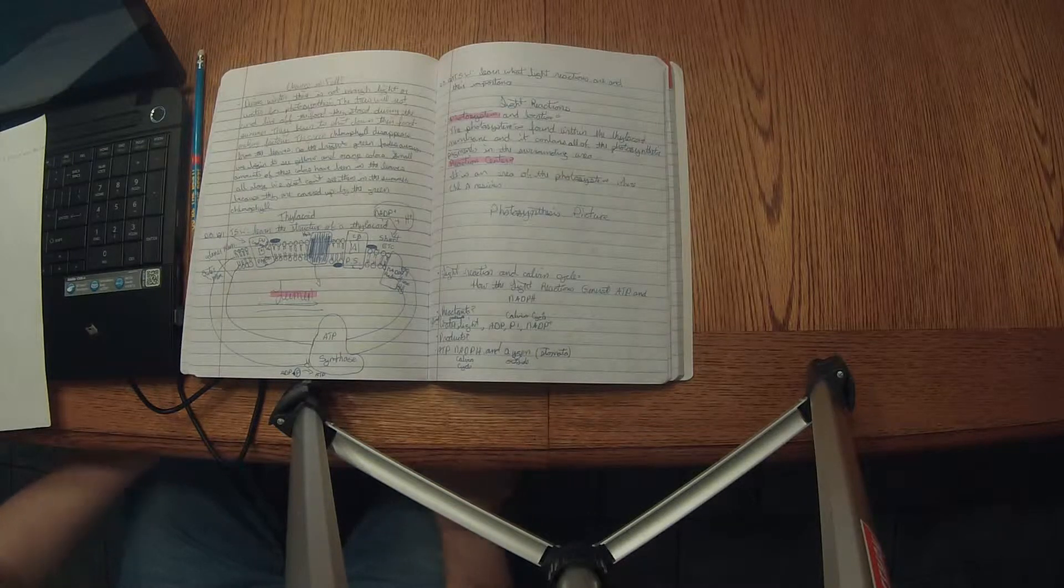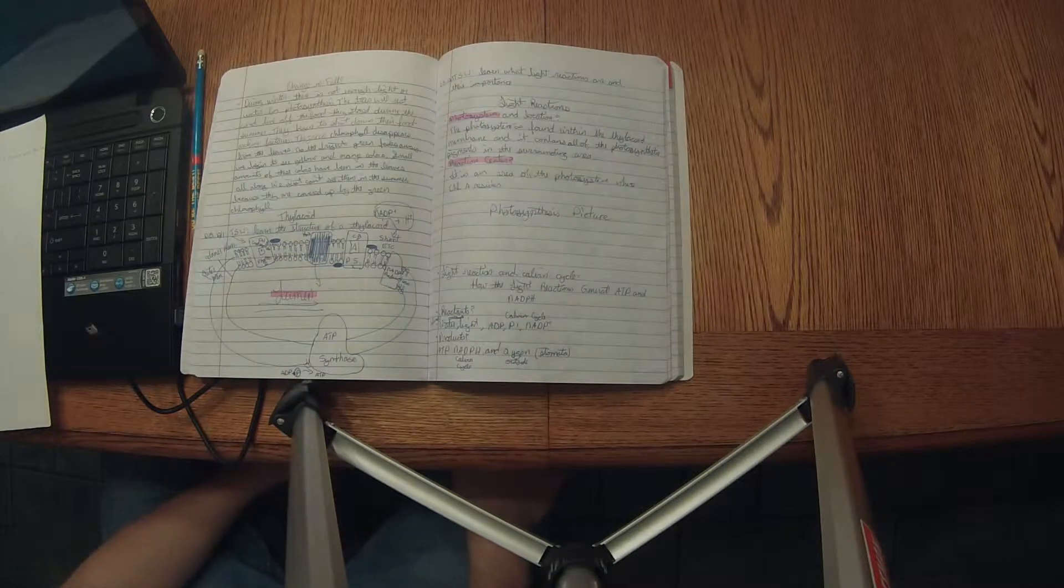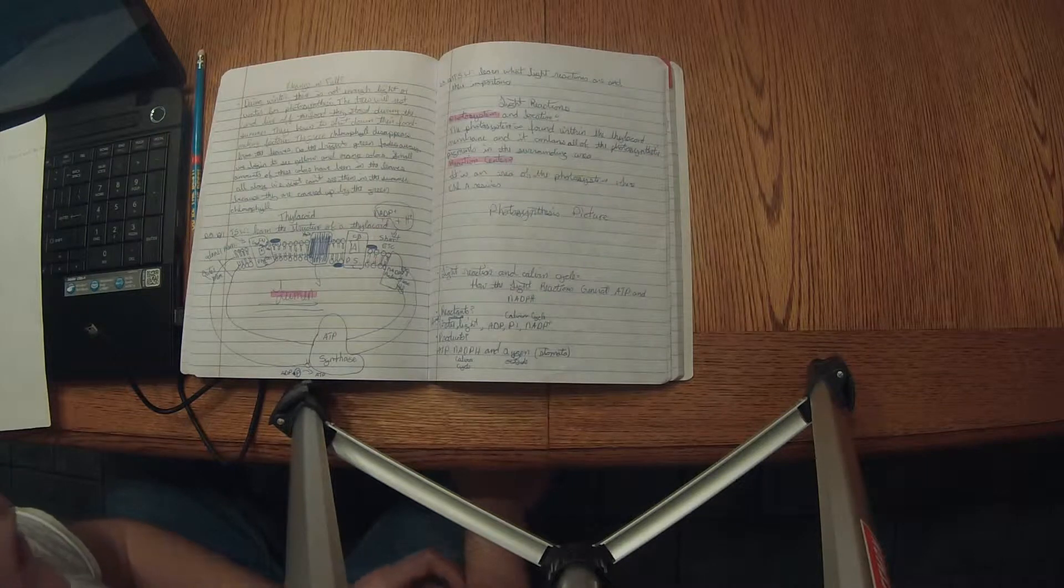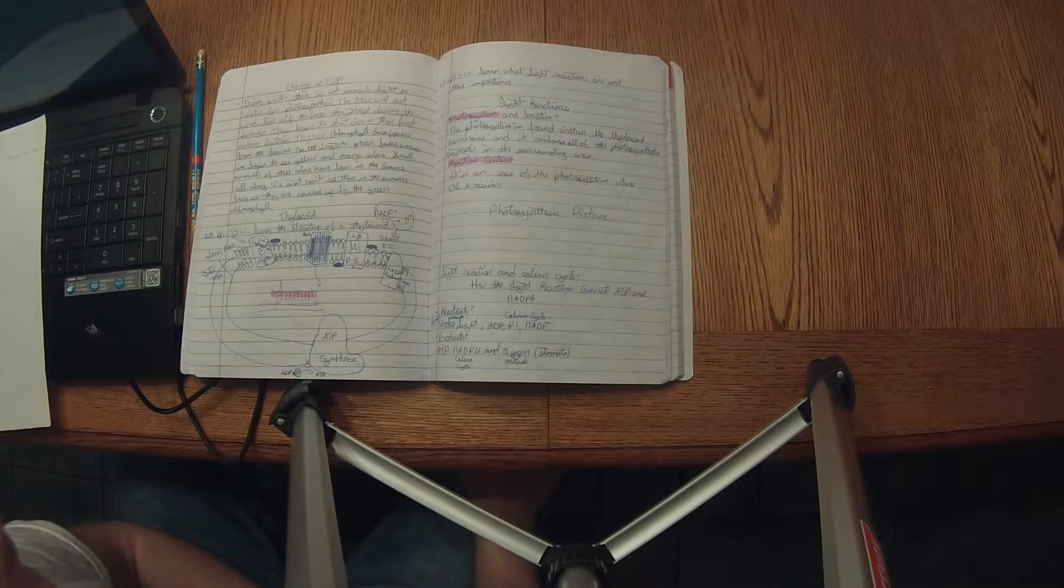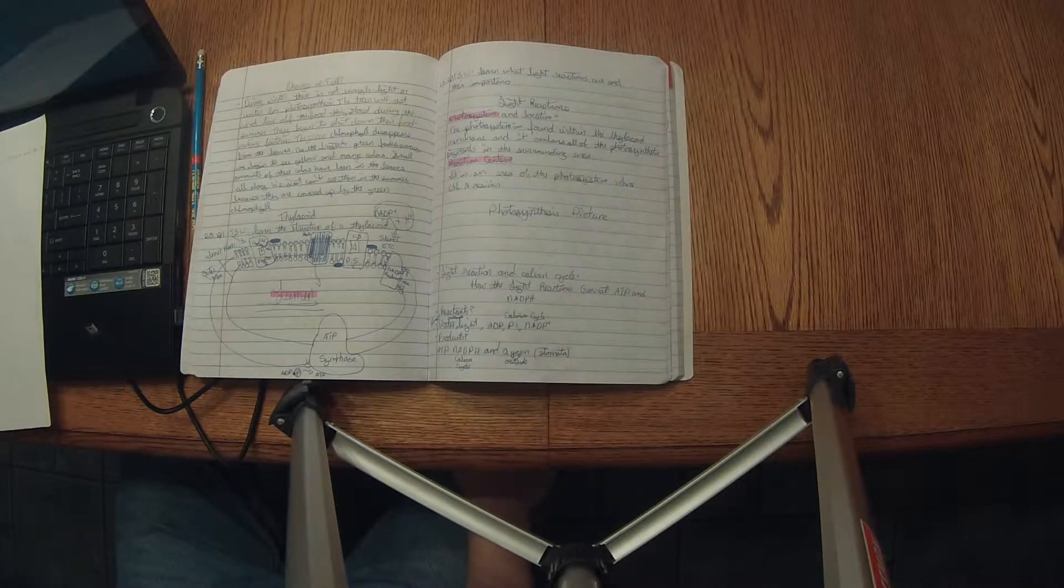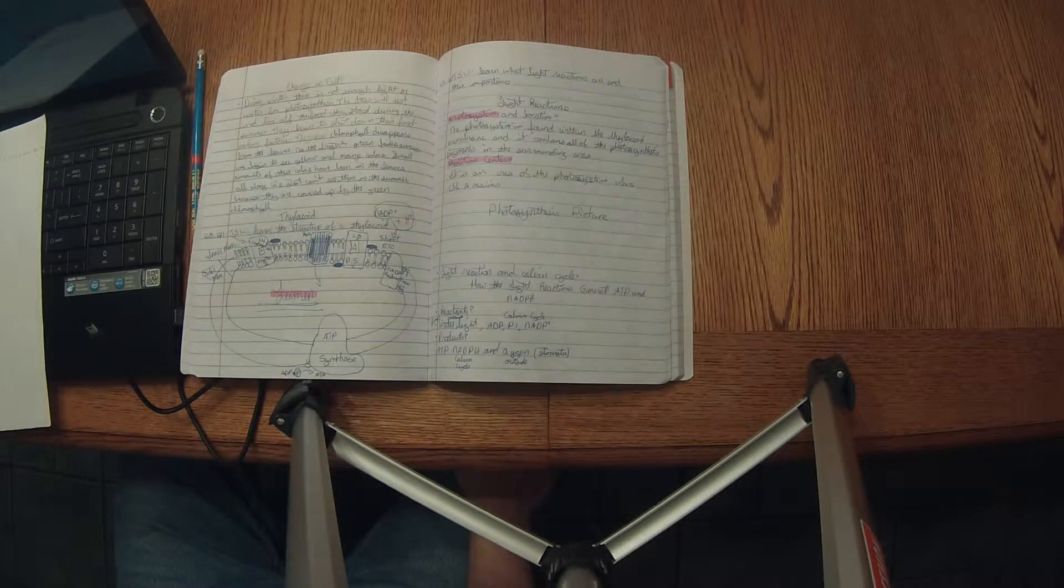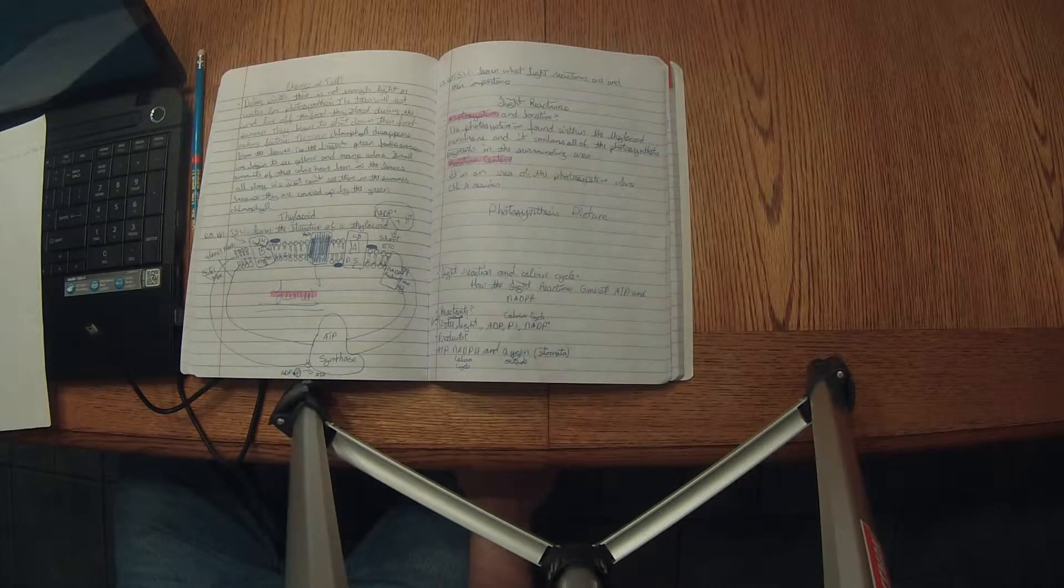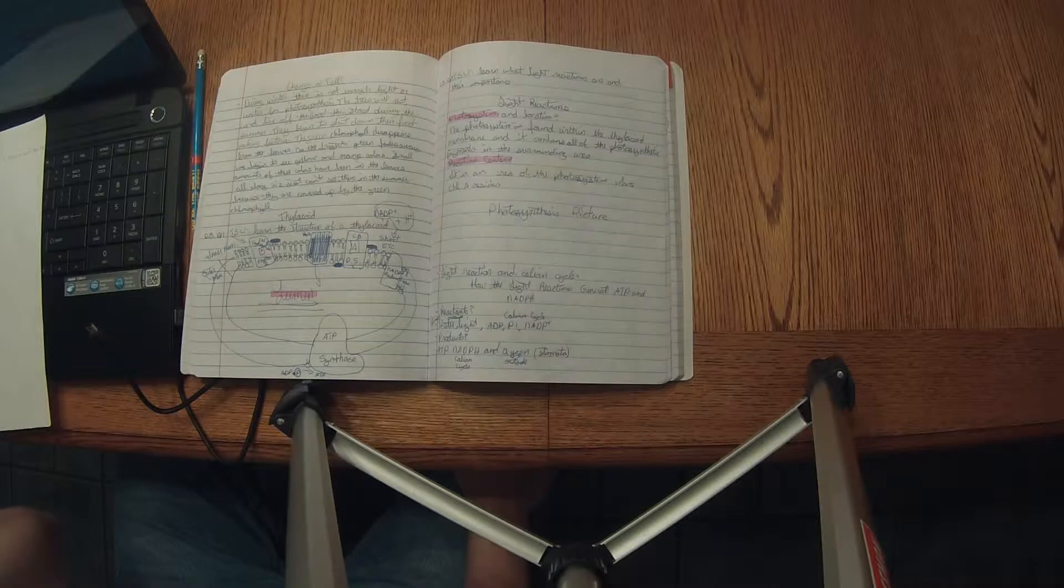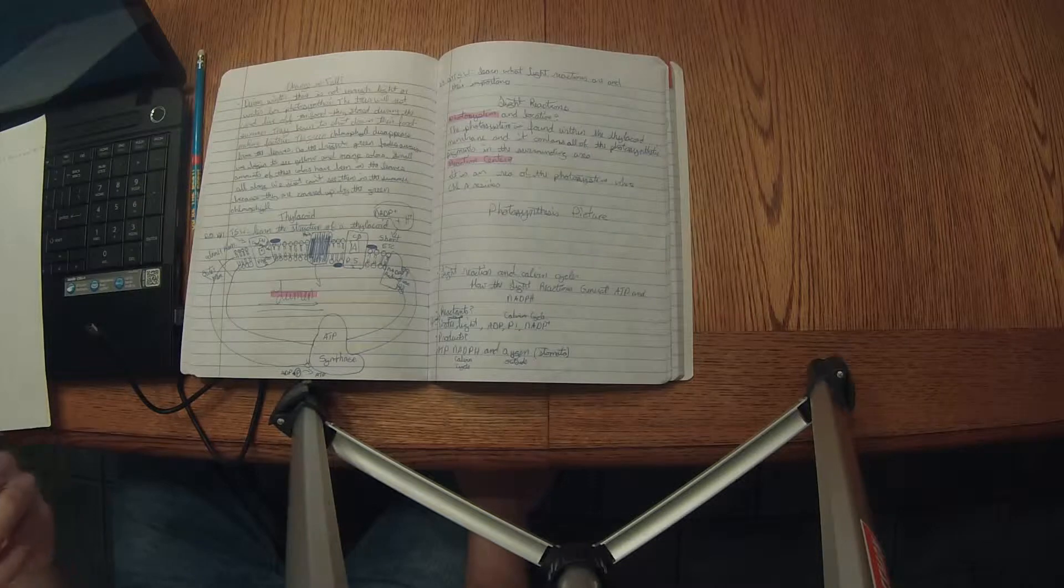Next to be talked about is the light reactions. It happens in the thylakoid which I talked about earlier. The reaction center is an area of the photosystem where chlorophyll A reacts. Light absorption comes from the chlorophyll B and the carotenoids.